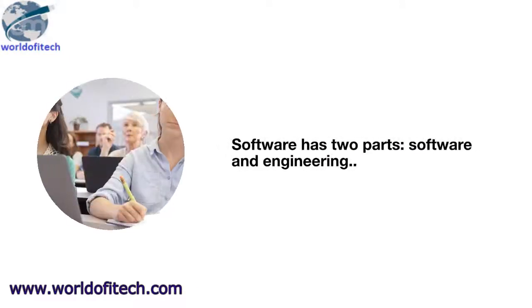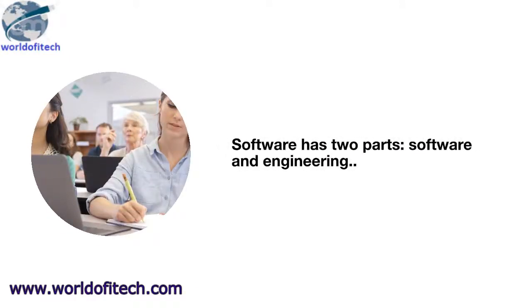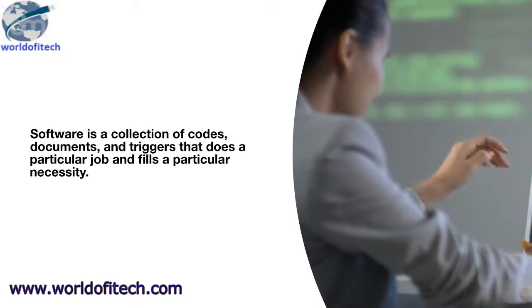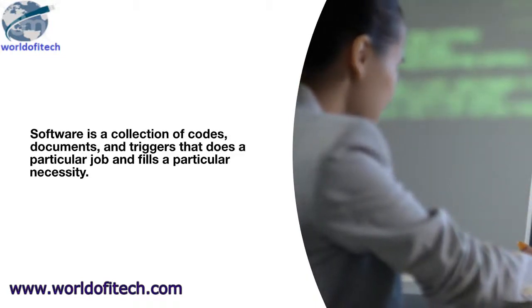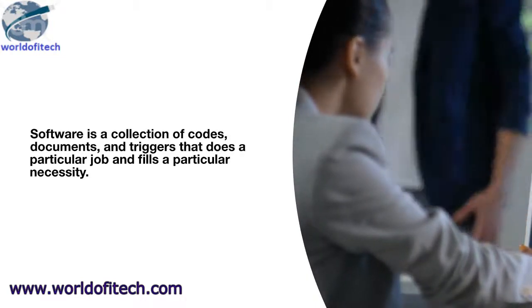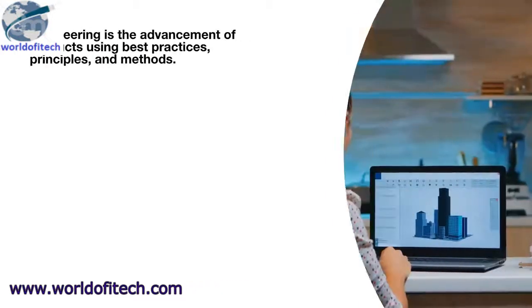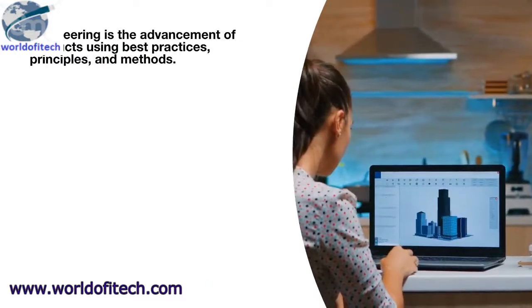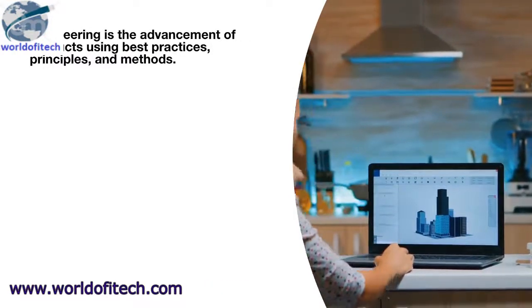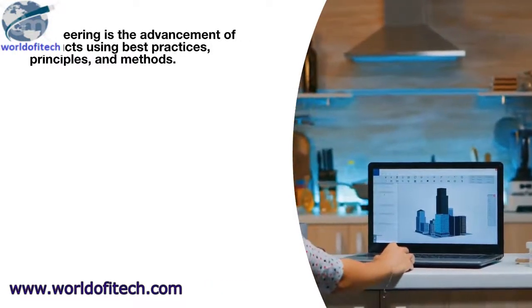Software engineering has two parts: software and engineering. Software is a collection of codes, documents, and triggers that does a particular job and fills a particular necessity. Engineering is the advancement of products using best practices, principles, and methods.